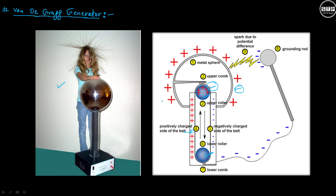This is how there will be accumulation of charge on the outer sphere. As this roller keeps rotating, there is a continuous supply of charge to the inner sphere, which is then transferred to the outer sphere. This way we can accumulate a large amount of charge on the outer metallic sphere. The Van de Graaff generator works on the principle of potential difference.